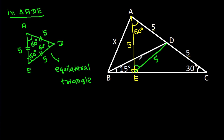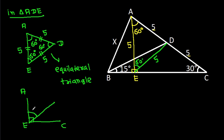And this angle ADE is 60 degrees. We have angle AEC is 90 degrees, and angle AED is 60 degrees, so angle DEB will be 90 minus 60 degrees, that will be 30 degrees.